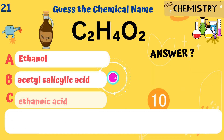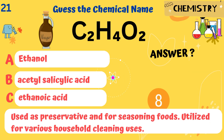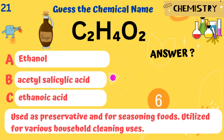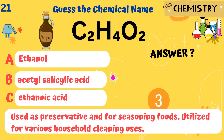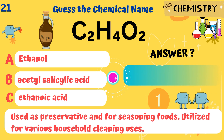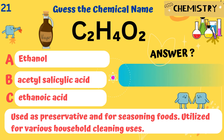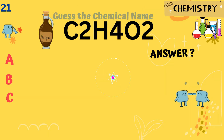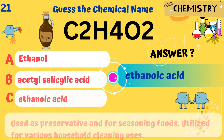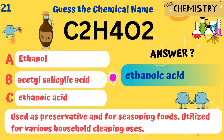C2H4O2. It is used as a preservative and for seasoning foods. It is also utilized for various household cleaning uses. Answer: Ethanoic acid.